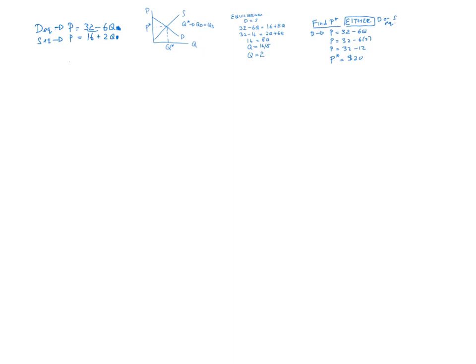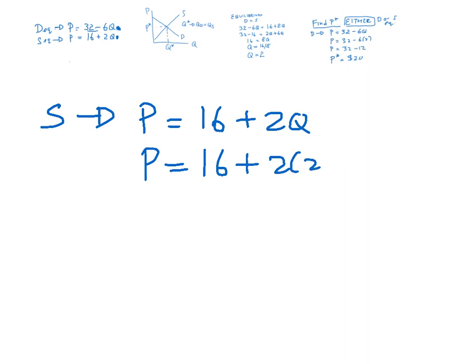Or if you wanted to use the supply equation, no problem. Price is 16 plus 2Q. Price is equal to 16 plus 2 times 2. Price is 16 plus 4. Price is $20. So it doesn't really matter.